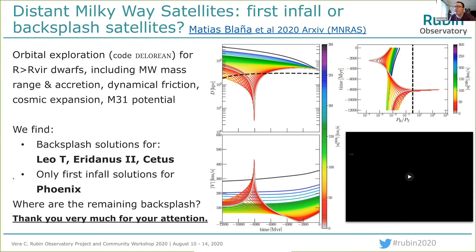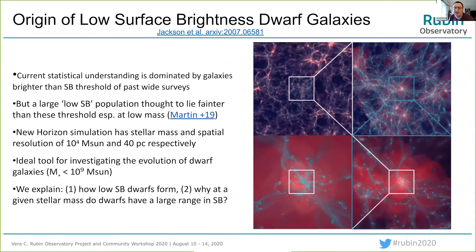Moving on to Ryan Jackson speaking on the origin of low surface brightness dwarf galaxies. Hi, I'm Ryan, a PhD student from the University of Hertfordshire. Our statistical understanding of galaxy evolution is fundamentally driven by objects brighter than the surface brightness limits of current wide area surveys, restricting our comprehension to relatively bright galaxies. However, both theory and observational work indicate that many galaxies are fainter than these limits, especially at the low mass end. To study these galaxies, we use the hydrodynamical cosmological simulation New Horizon, which has a stellar mass resolution of 10^4 solar masses and a maximum spatial resolution of 40 parsecs, making it ideal for investigating dwarf galaxy evolution.